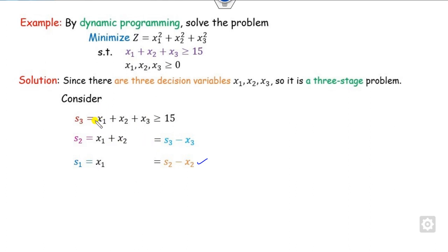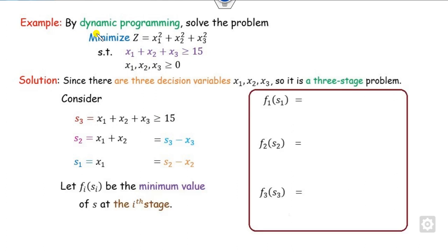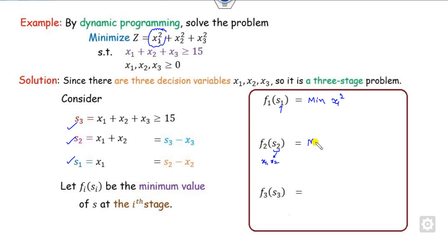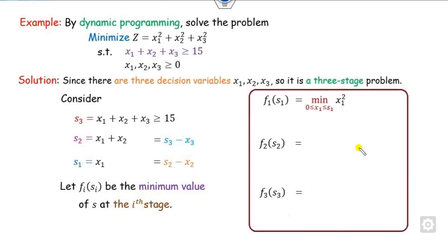Once you define these three states — the stages — we can move on to the objective function. Let f(1, x1) be the objective function corresponding to stage 1, f2 for stage 2, and so on. Since this is the objective function for s1, you think about the function only on x1, that is minimization of x1 square. Similarly for x2, that is minimum of x1 plus x2 square. You can think about the third term similarly.